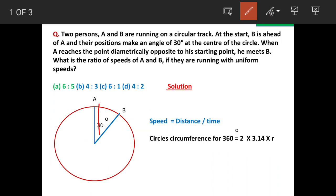A has done 180 degrees, and B has done 150 degrees, because he is 30 degrees ahead of A.